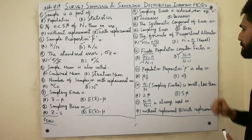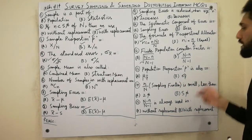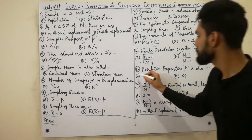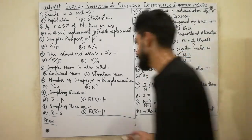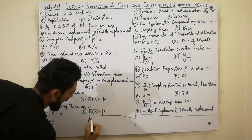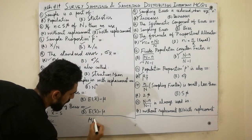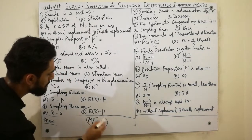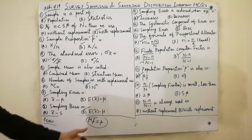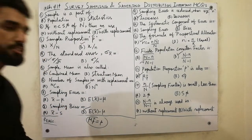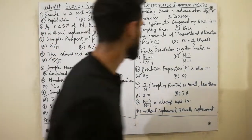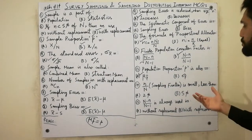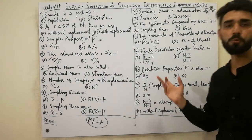Population proportion small p is also equal to mu p-hat. We already know that mu p-hat is always equal to p, which is used in problems. So population proportion p is also equal to mu p-hat.